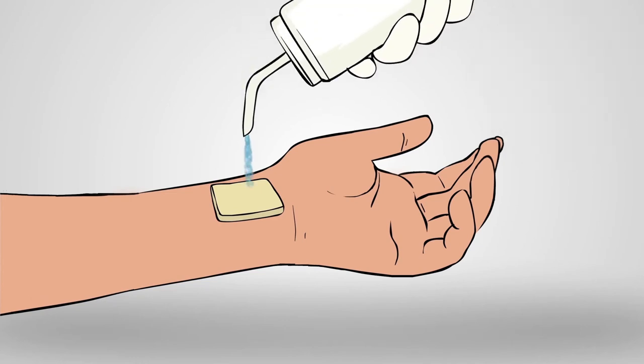Axiostat can be easily removed by irrigating with saline or water without further causing trauma or dislodging the clot.